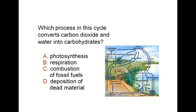Which process in this cycle converts carbon dioxide and water into carbohydrates? Plants require carbon dioxide and water, plus sunlight, to make their food — which is sugar or carbohydrates — and they produce oxygen as a by-product. This process happens within the plant leaves. It's photosynthesis.